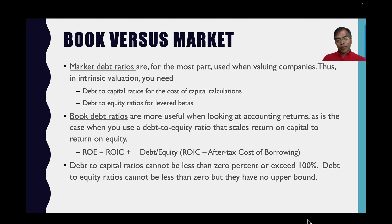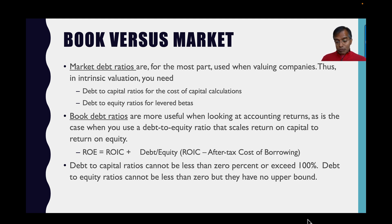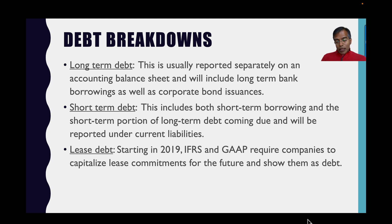Note that when you compute debt-to-capital (debt over debt plus equity), that number cannot be less than 0% or exceed 100%. With debt-to-equity, however, it cannot be less than 0% but there is no upper bound — debt can be 9 times, 15 times, or 20 times equity at highly levered companies.